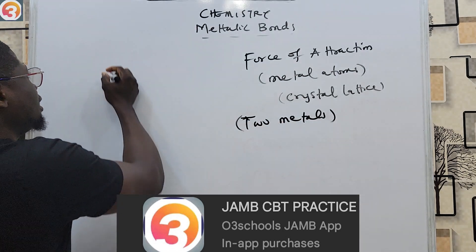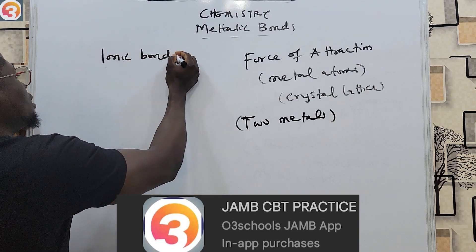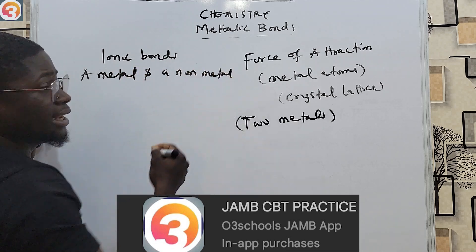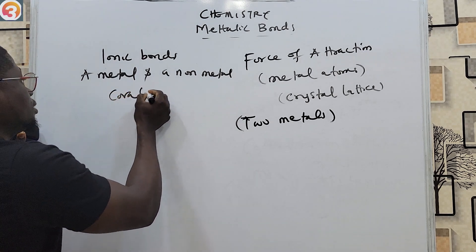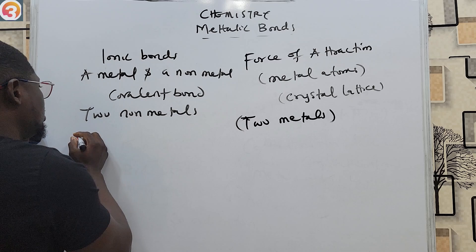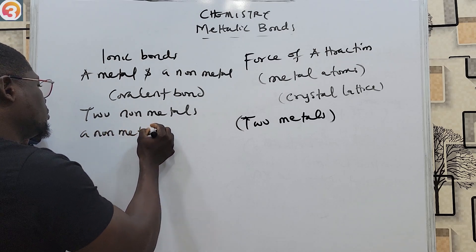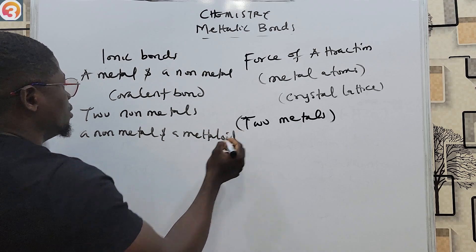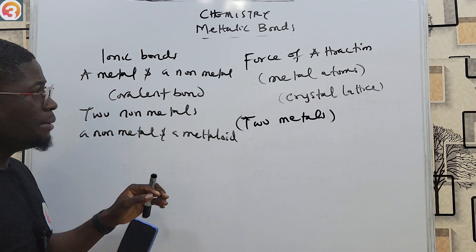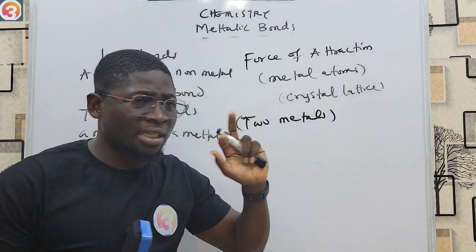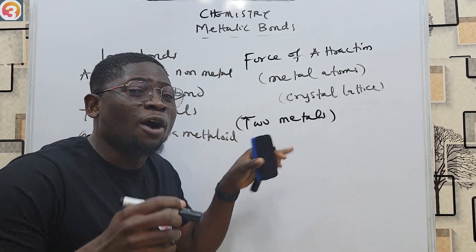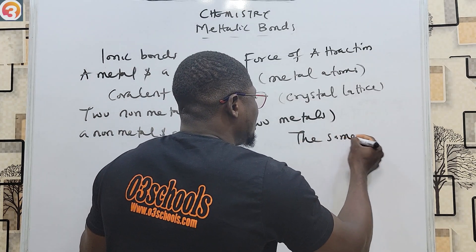Let's go back to ionic bonds — ionic bonds are between a metal and a non-metal. In covalent bonds, it is between two non-metals, or between a non-metal and a metalloid. But for metallic bonds, it is between two metals. The difference is that the metal atoms involved are of the same kind.